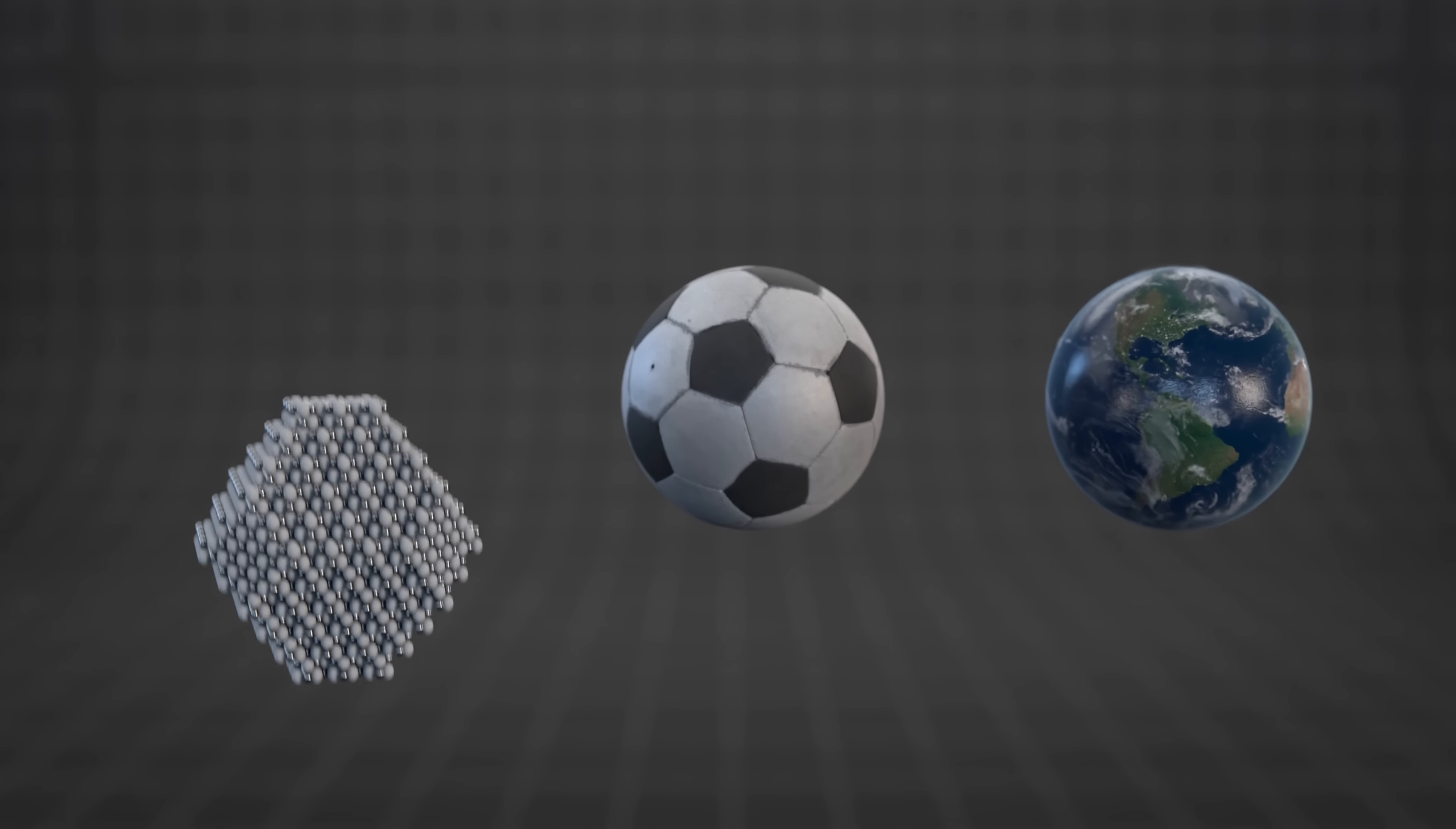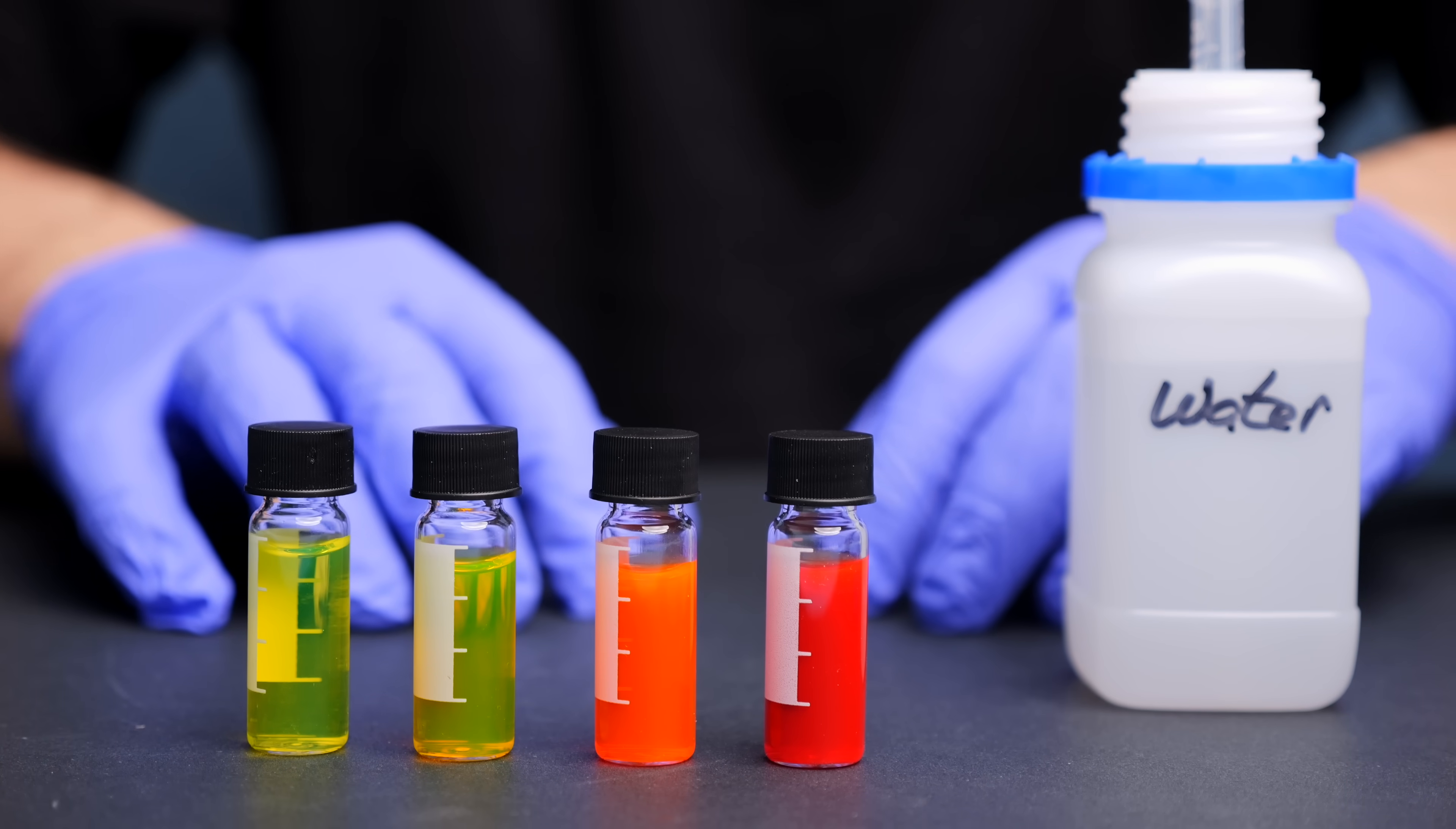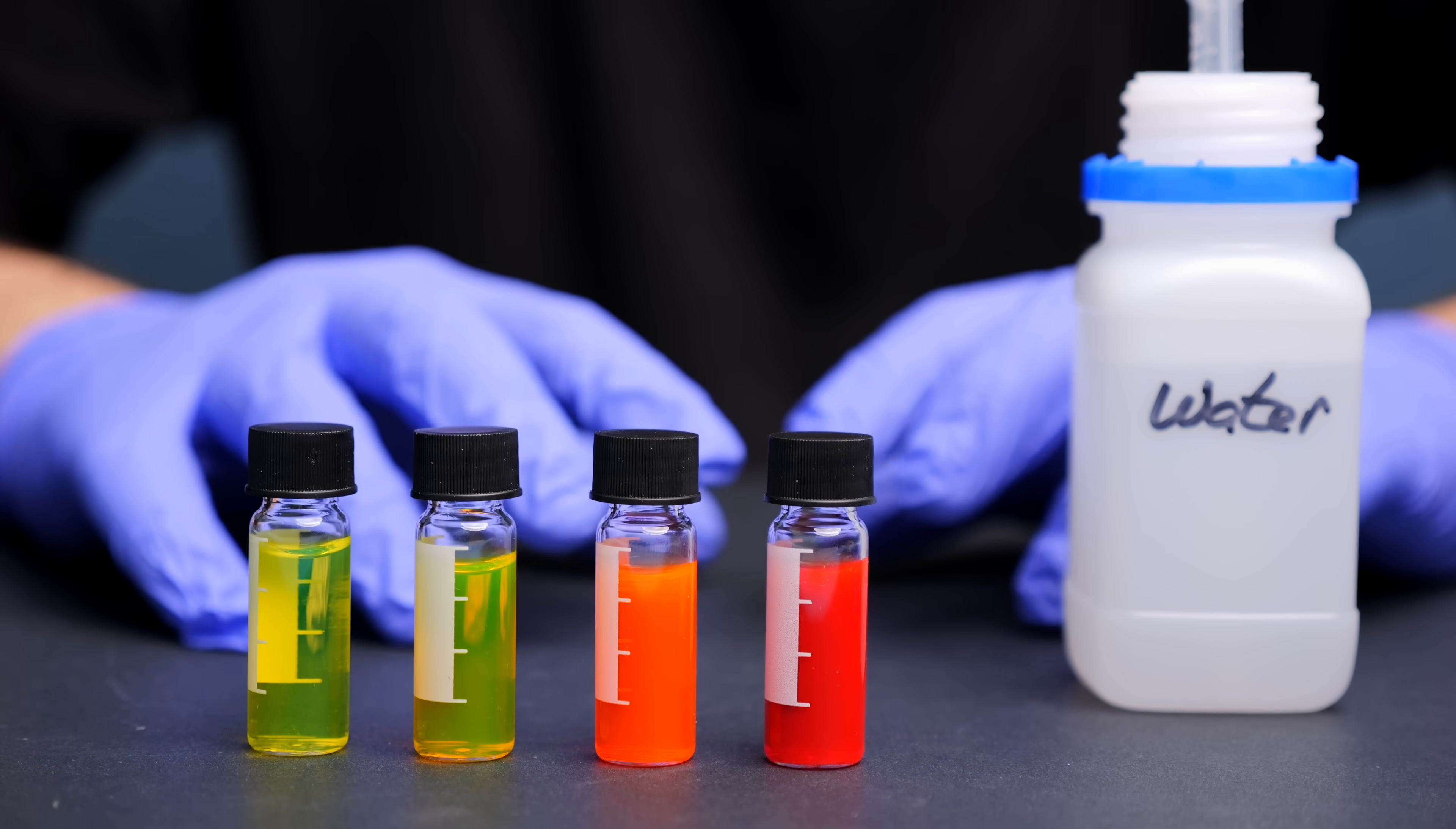For scale, the size of a quantum dot is to a football roughly what the football is to Earth. It is unimaginably tiny, and only a few dozens of atoms wide. Now this is the scale where quantum effects start to take over, which is what you can see with your own eyes in the form of various colors.